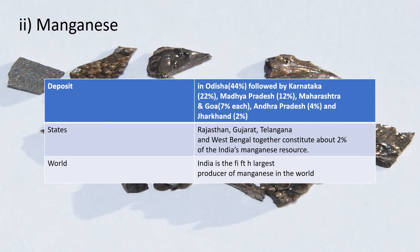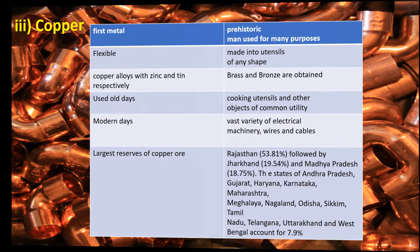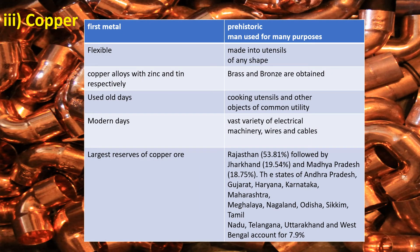Manganese reserves: Odisha leads, Karnataka 22%, Madhya Pradesh 12%, Goa and Maharashtra 7% each, Andhra Pradesh 4%, and Jharkhand 2%.